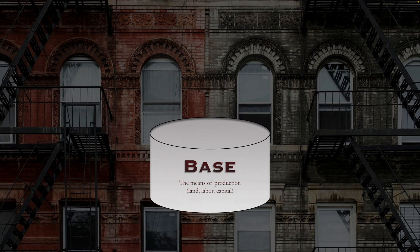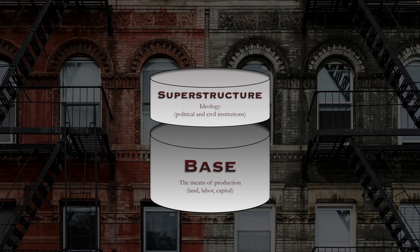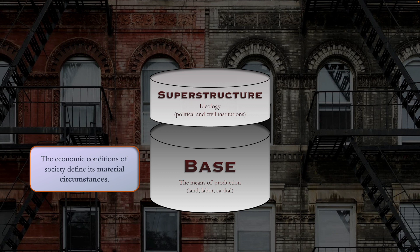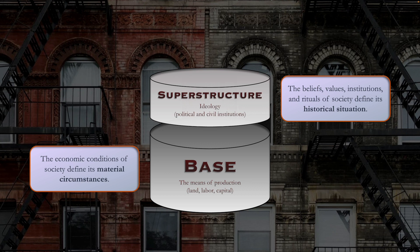We'll start by talking about the base — the means of production, the land, the labor, and the capital needed to produce the means of subsistence. And then there is what Marx called the superstructure: the political or civil institutions that promoted values, laws, and culture. Collectively, we call this the ideology — the belief system that sustained the relationship between the different classes and the means of production. The base refers to the economic conditions, the material circumstances of society, while the superstructure — the beliefs, values, institutions, and rituals — defines its historical situation.